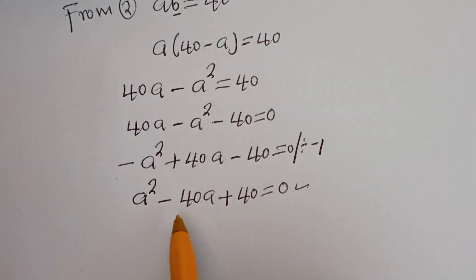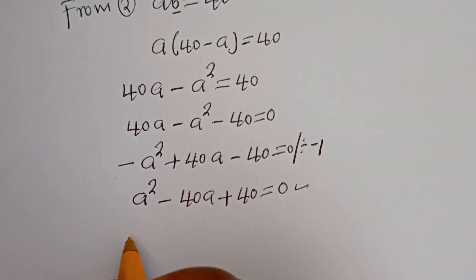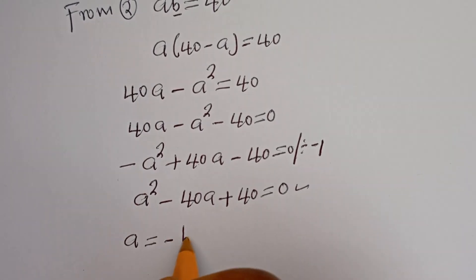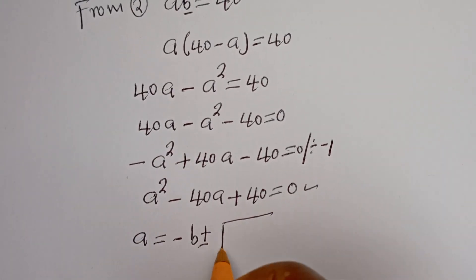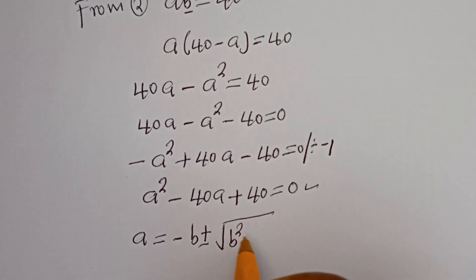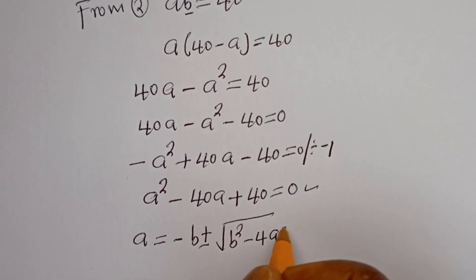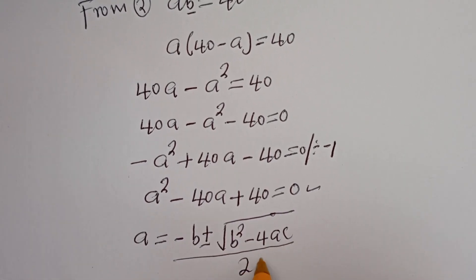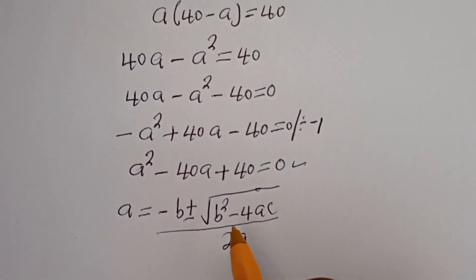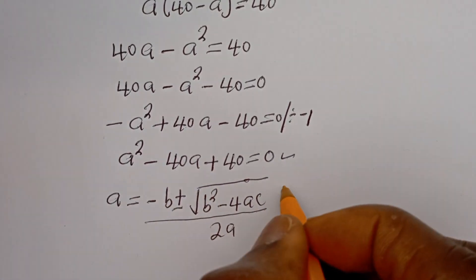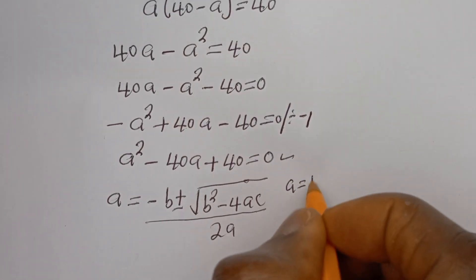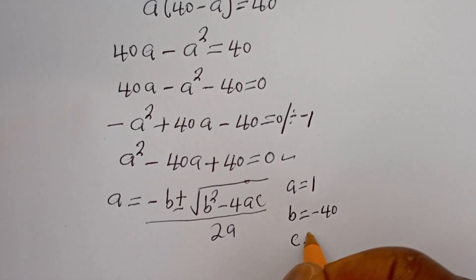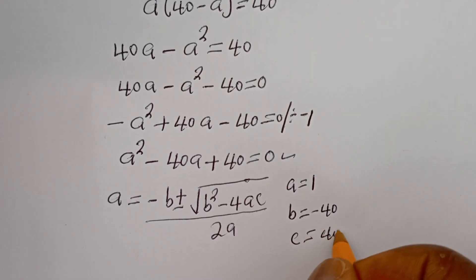This is a quadratic equation. Using the quadratic formula: A equals negative b plus or minus square root of b squared minus 4ac, all over 2a. From this equation, a = 1, b = minus 40, and c = 40.